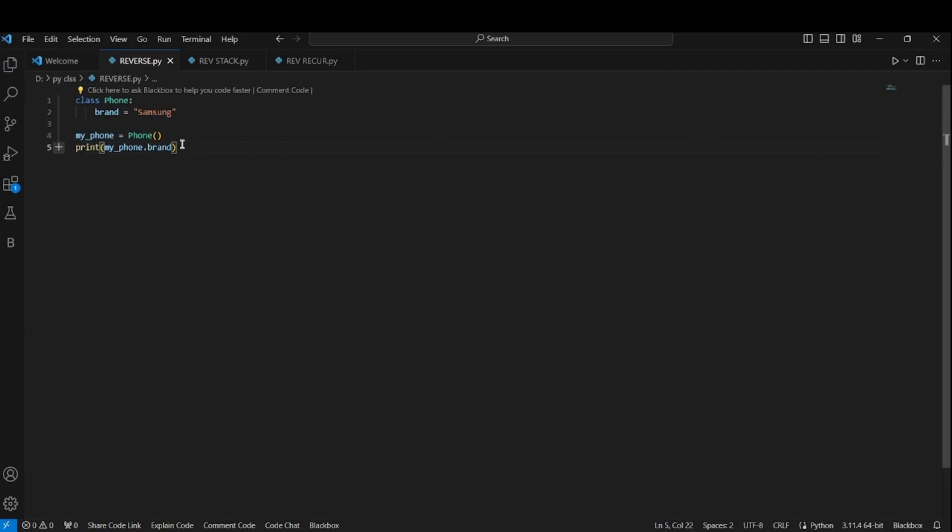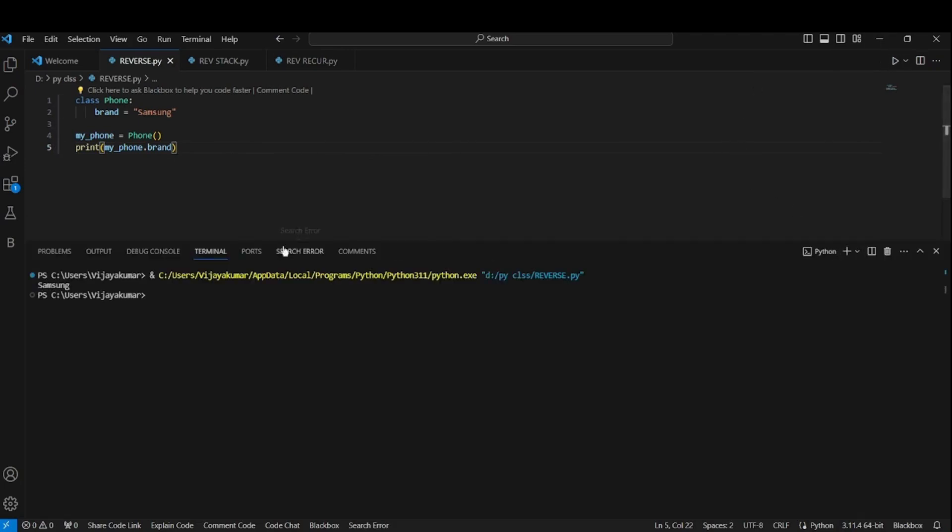How to get that? It comes to brand. To see the attribute in the object you created, you can print the attribute by typing the name of the object and then a dot sign, then the name of the attribute. You will finally get the output as Samsung.